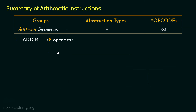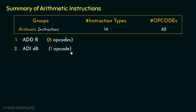The next instruction type was ADID8. It performs a similar operation to ADDR. The only difference is that here we are sending the 8-bit data in immediate addressing mode — that is, within the instruction itself, we provide the data to be added with the content of the accumulator. For this instruction type, we have got only a single opcode.